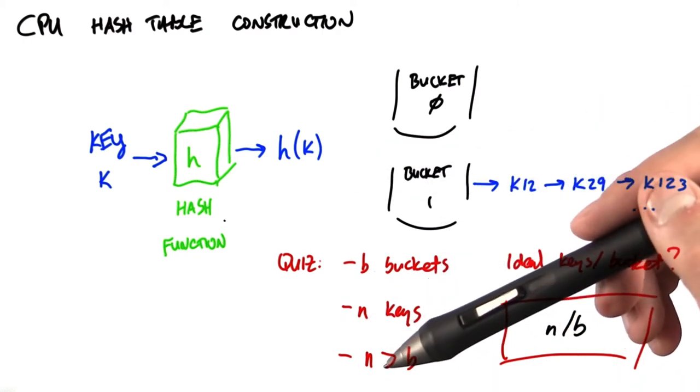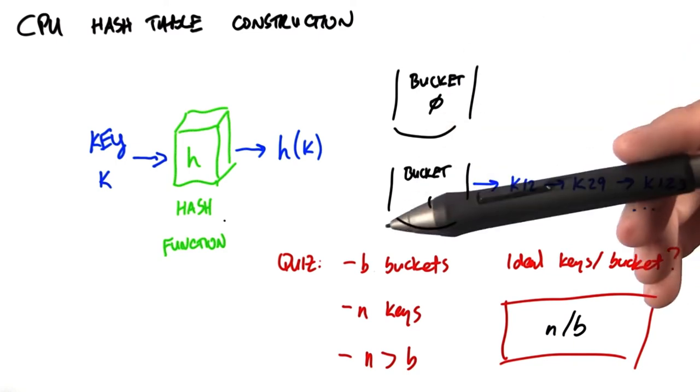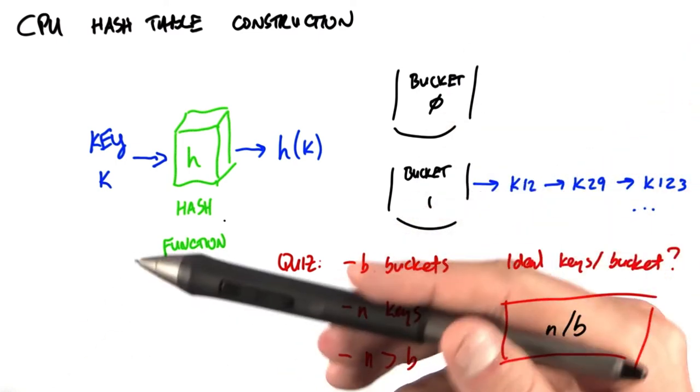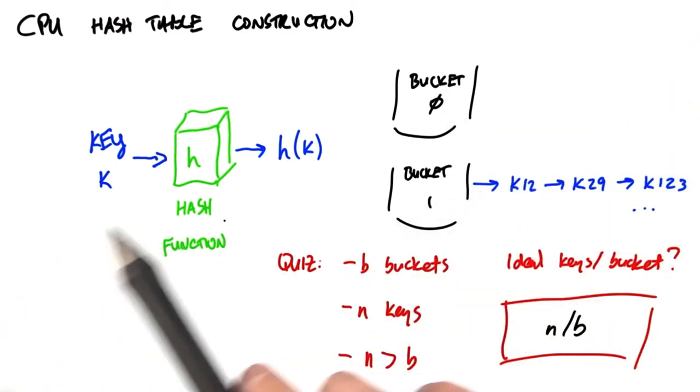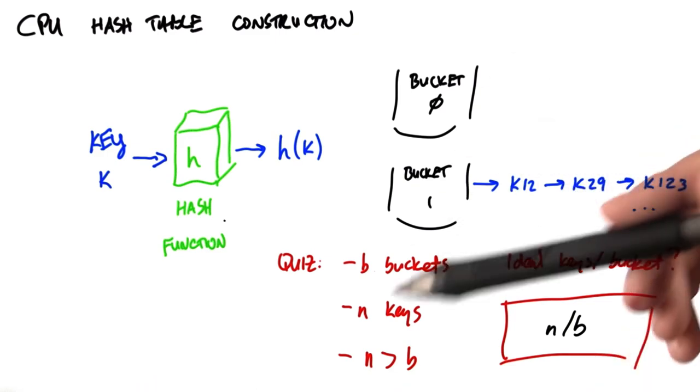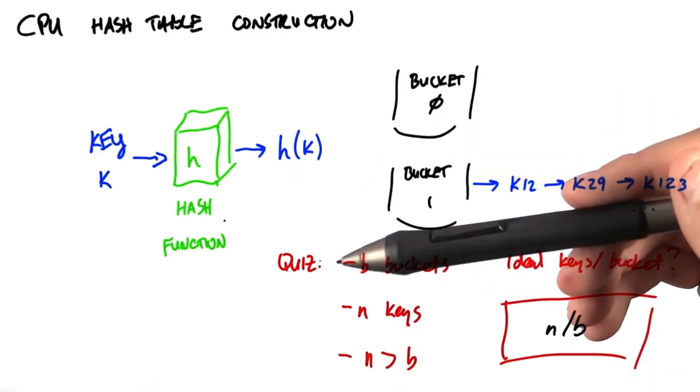If we pick a bad hash function, maybe we end up with all the items in one bucket. And this is bad because any lookups into that bucket might have to look at all n items. Or we could end up with no items in a bucket. That's a waste of a bucket.